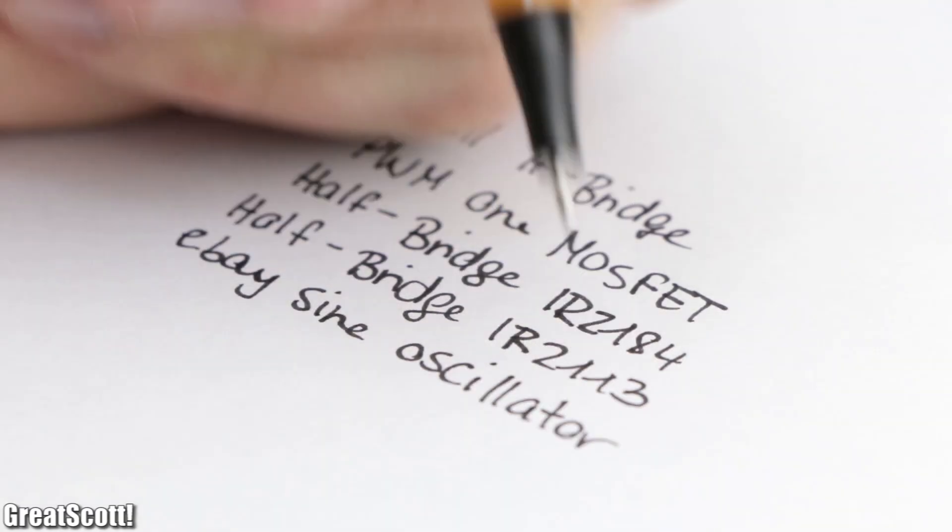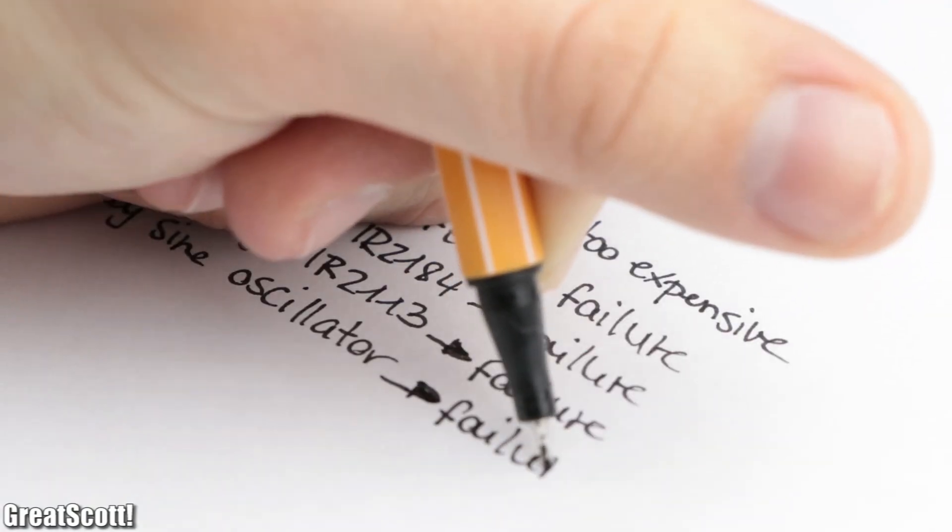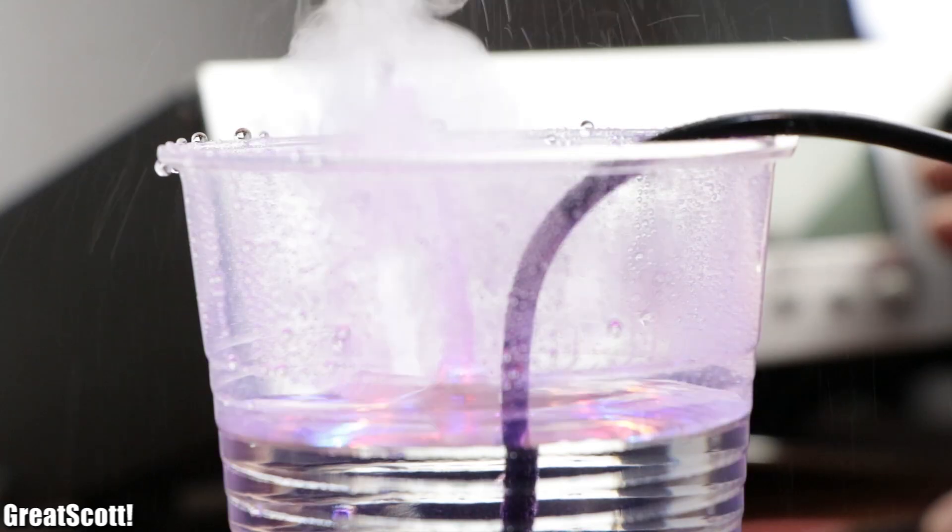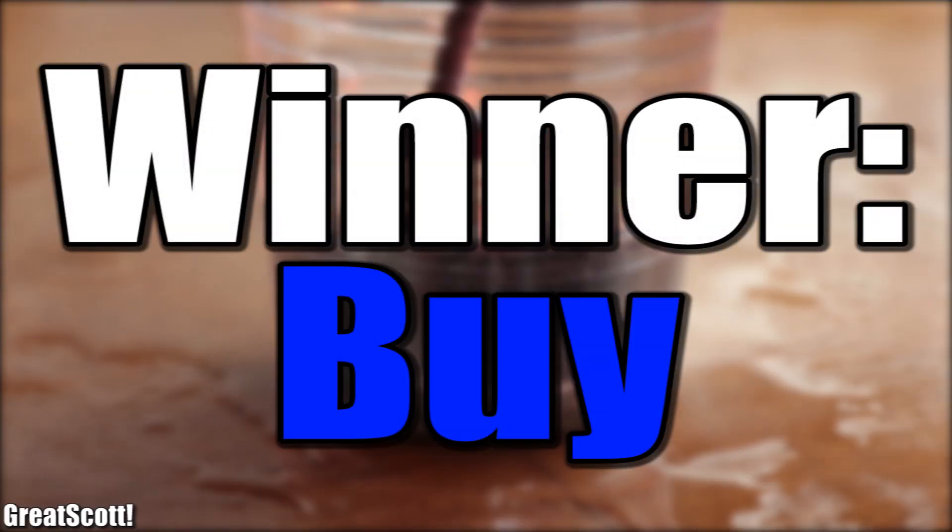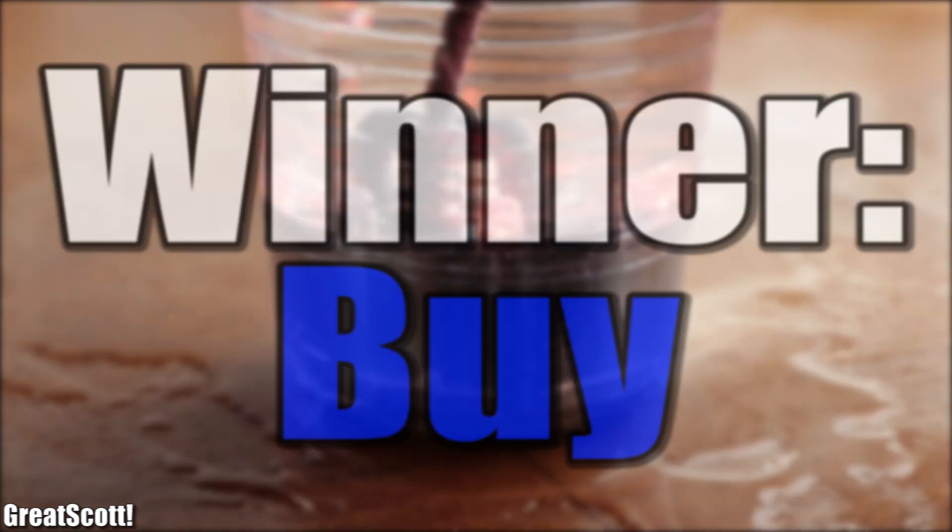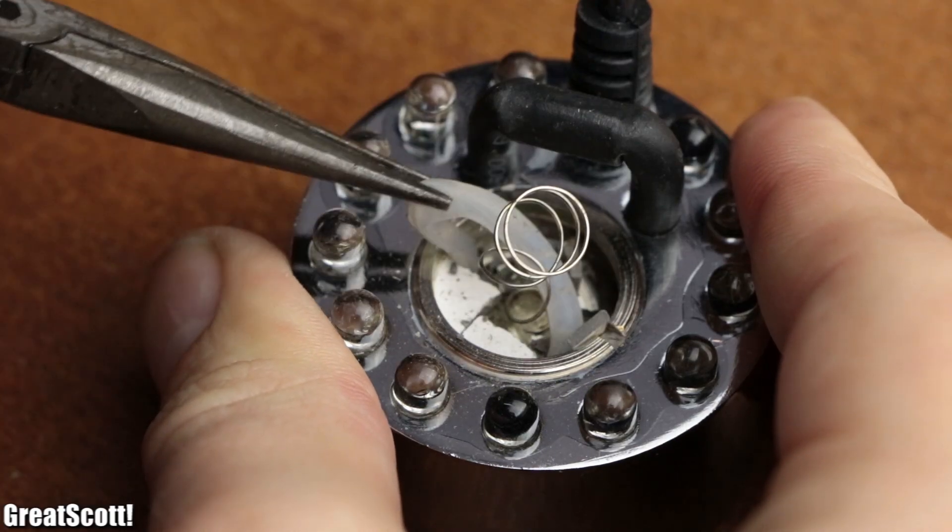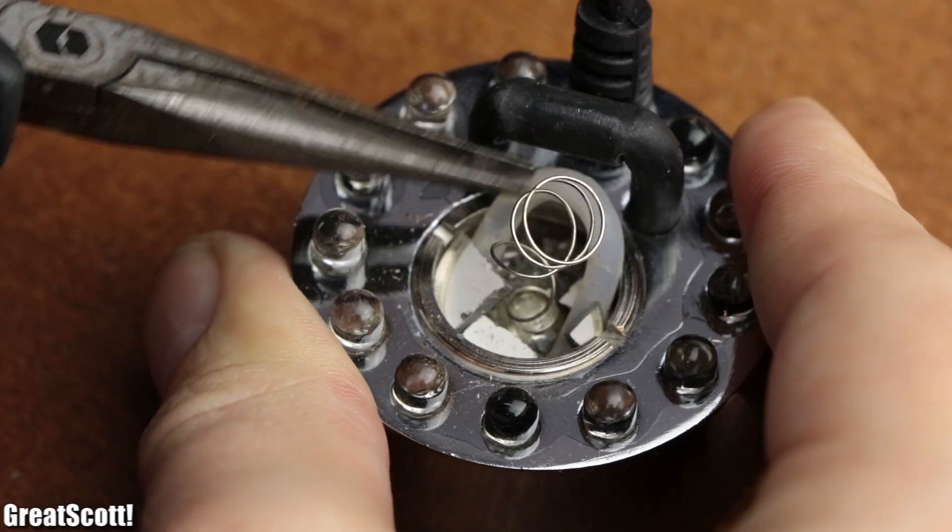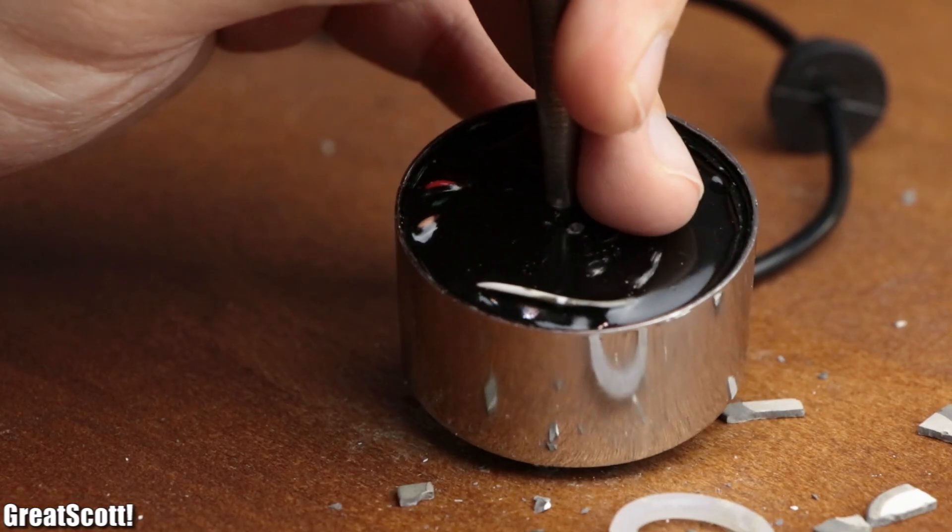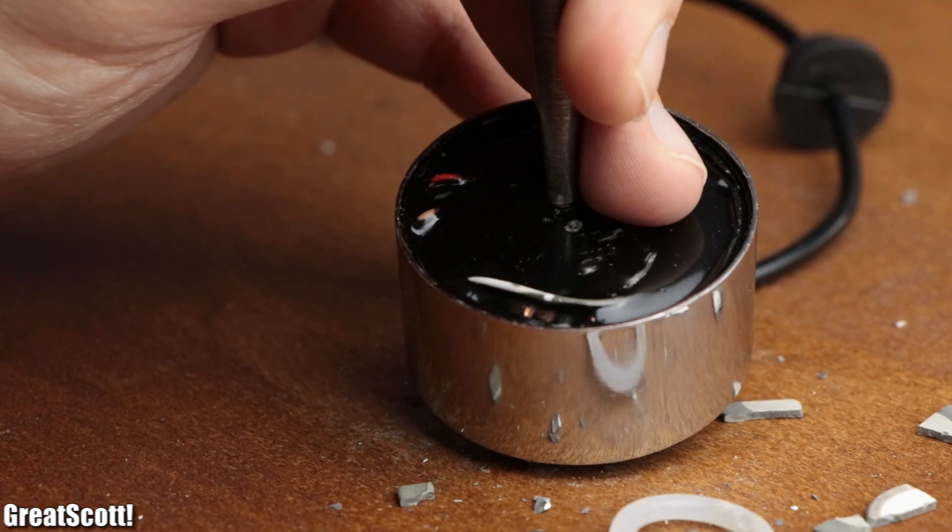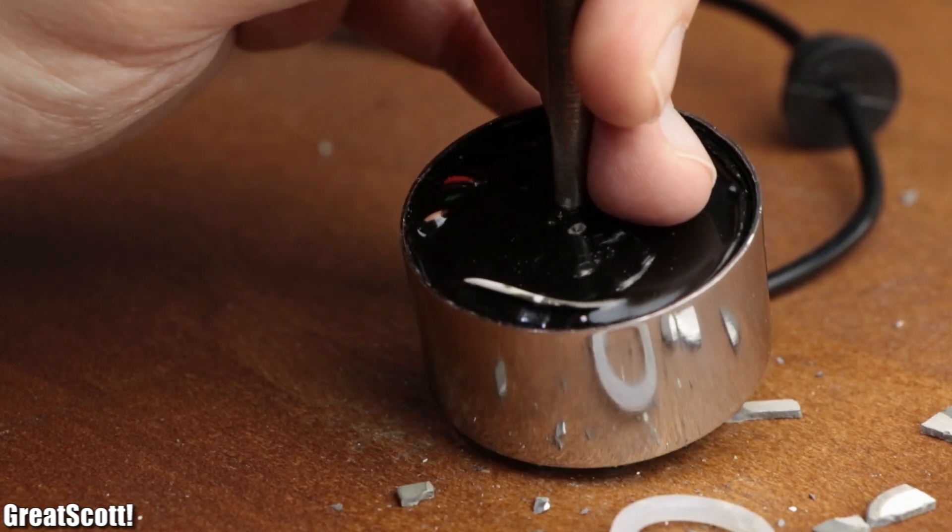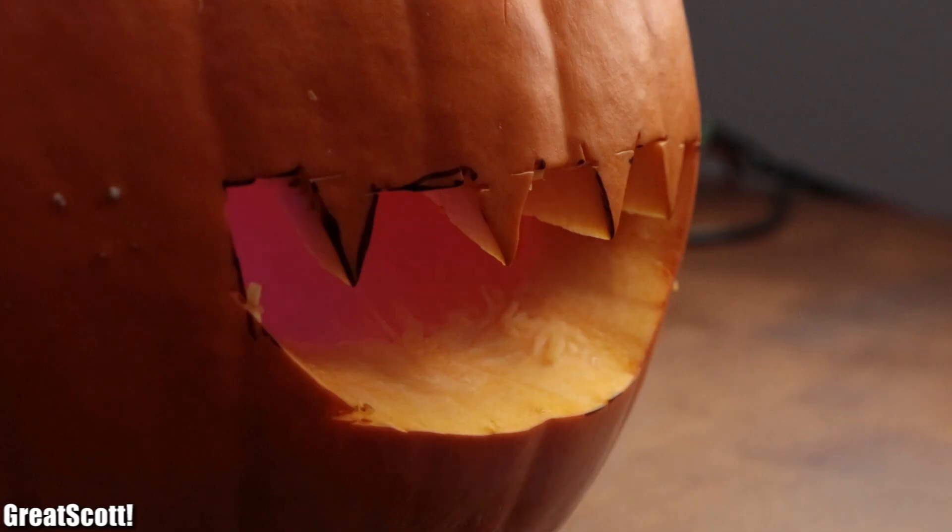So in conclusion, after creating 5 circuits, which were either too expensive or a complete failure, it would be wise to just buy the product instead of DIYing it. At least in my opinion. I hope you enjoyed watching my stupidity and at least learned something new along the way. If you have more ideas for DIY or buy episodes, feel free to share them in the comment section. As always, don't forget to like, share and subscribe. Stay creative, and I will see you next time.